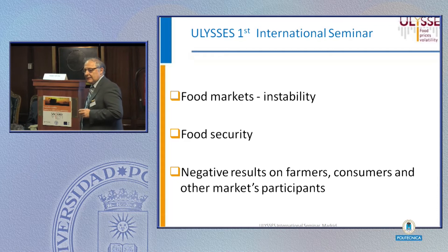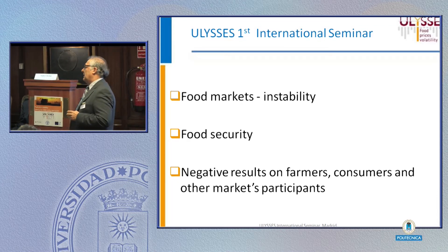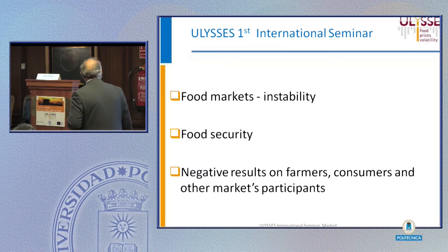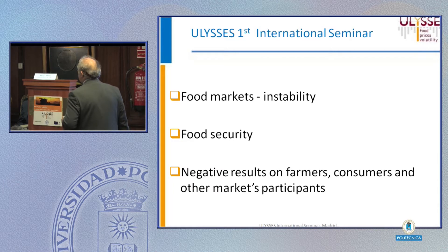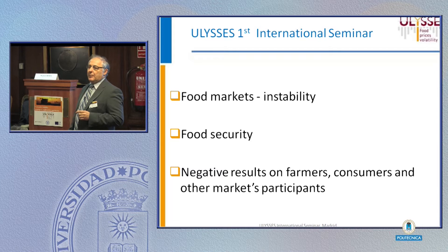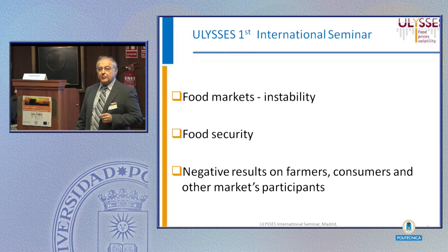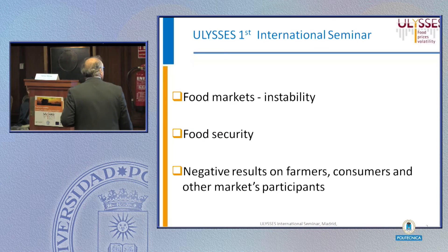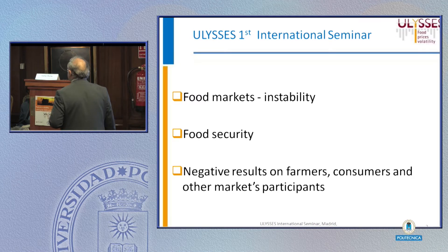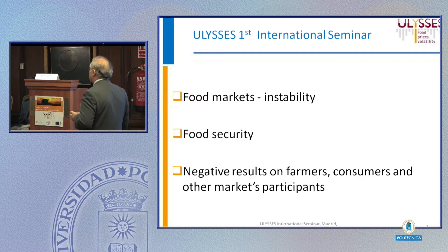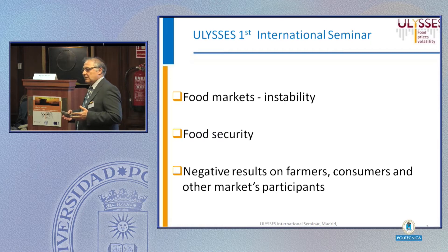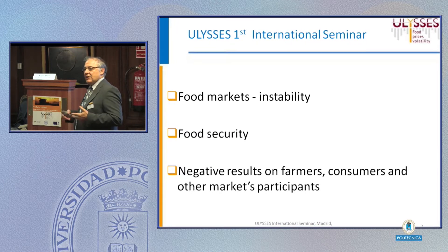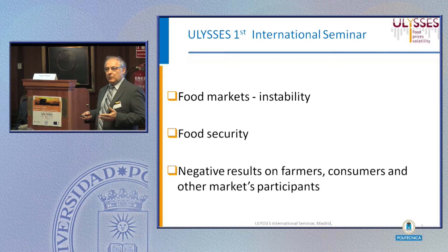In the last ten years it appears that the problem of food price volatility is very important. It has negative effects first on food security, both for developing countries and for emerging and developed countries. Also negative results on market participants — the farmers, consumers and other participants. It's obviously negative what the effect is on farmers. They need a more stable economic environment in order to plan investment decisions, predictable cash flow, and with price volatility it's impossible.